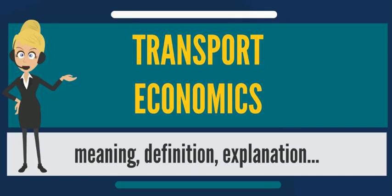In transport, demand can be measured in number of journeys made or in total distance traveled across all journeys — for example, passenger kilometers for public transport or vehicle kilometers of travel (VKT) for private transport. Supply is considered to be a measure of capacity. The price of the good — travel — is measured using the generalized cost of travel, which includes both money and time expenditure.